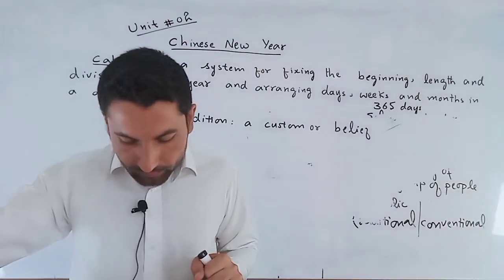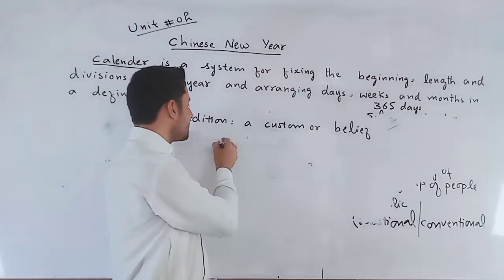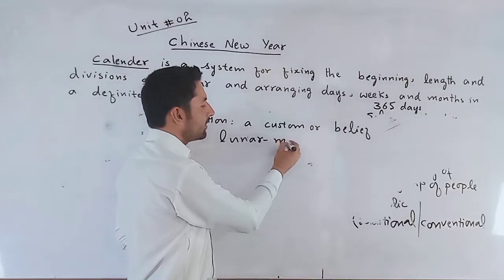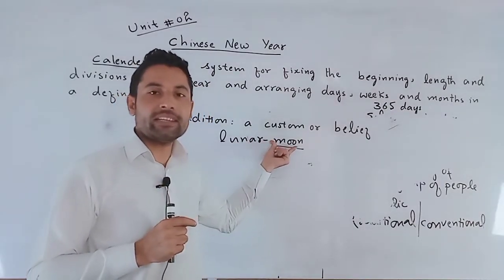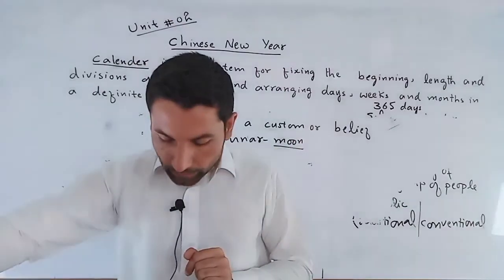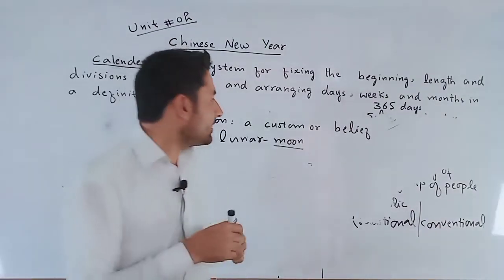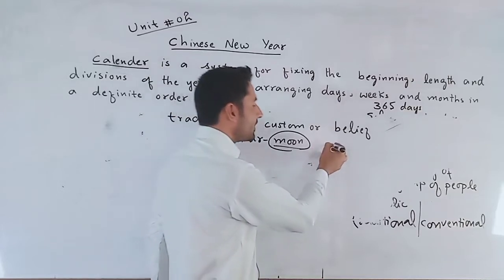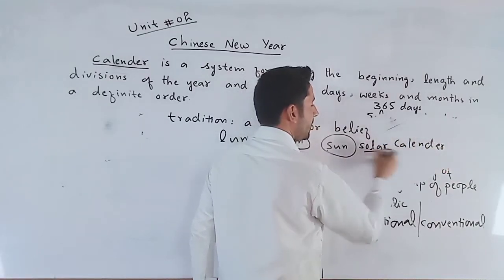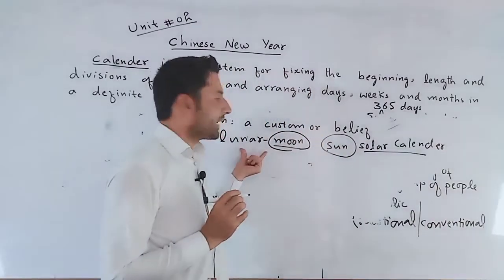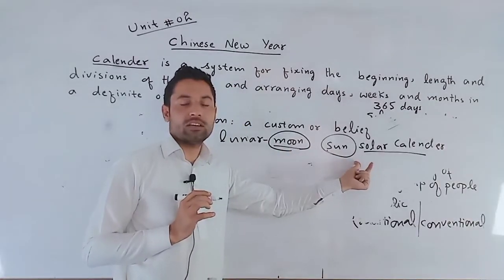Since the lunar calendar is based on the phases of the moon — which has a shorter cycle than the sun — as I told you earlier, the moon has a shorter cycle compared to the sun, which we call the solar calendar. So there is a gap and a difference between these two calendars. This lunar calendar, which is connected with the moon and its phases and revolution, is shorter than the solar calendar by around 11 to 12 days.